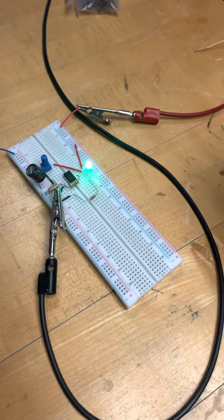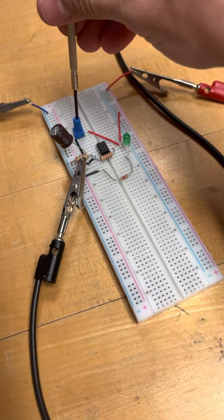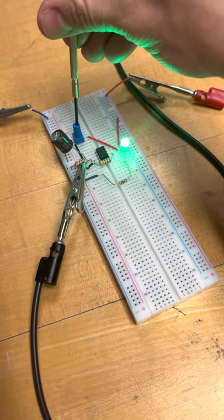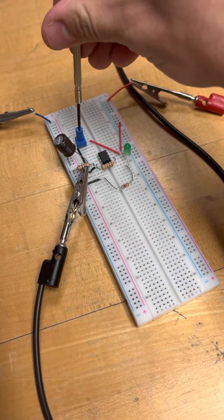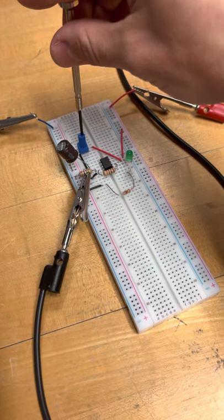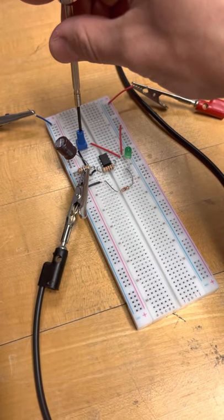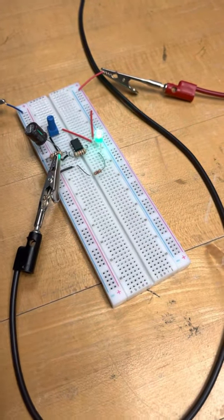Now, if I adjust the potentiometer, the blinking should increase. Vice versa, if I decrease the value of the potentiometer, the LED will slow down, the blinking will slow down.